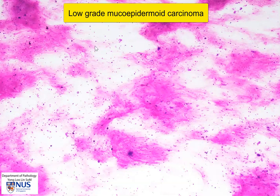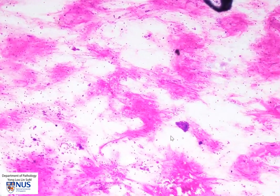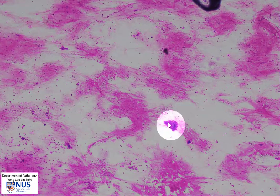This is conventional cytology, and we're looking at the air-dried smear from one of the cases. At low magnification, we can see that it is relatively hypocellular. There is a lot of rather thick mucin in the background, and as we look around, we can see occasional more cohesive clusters of cells.